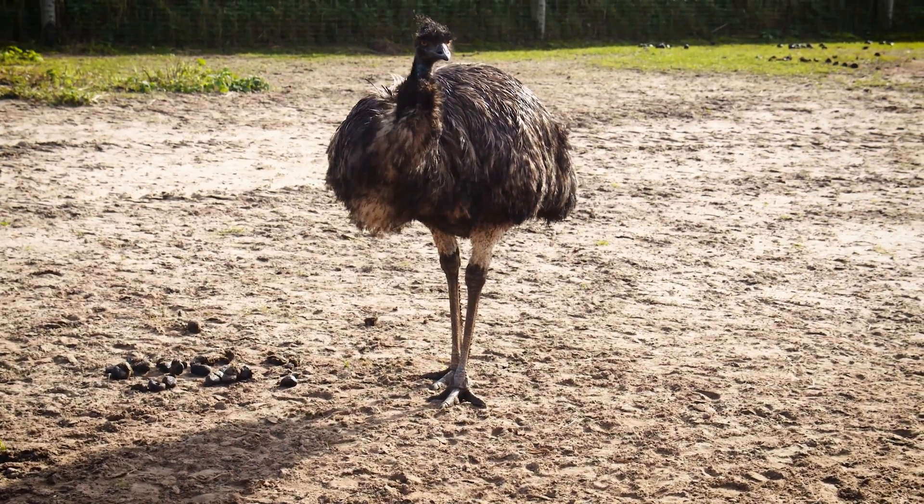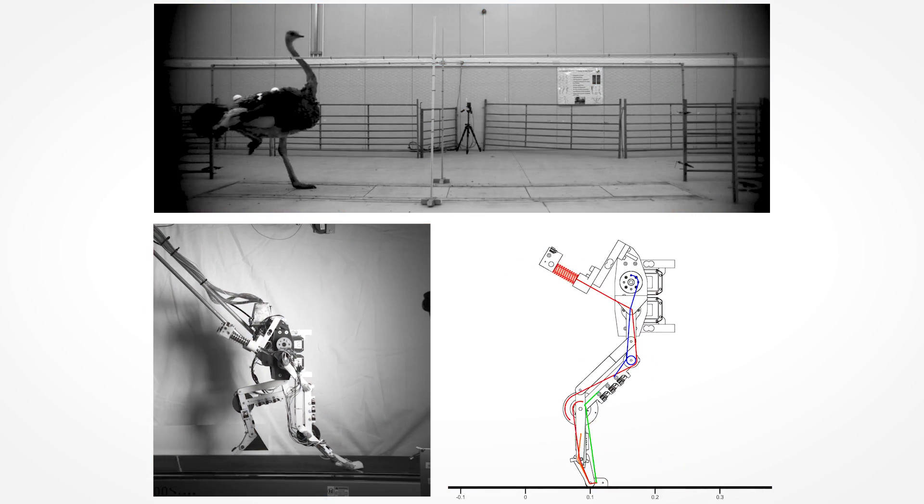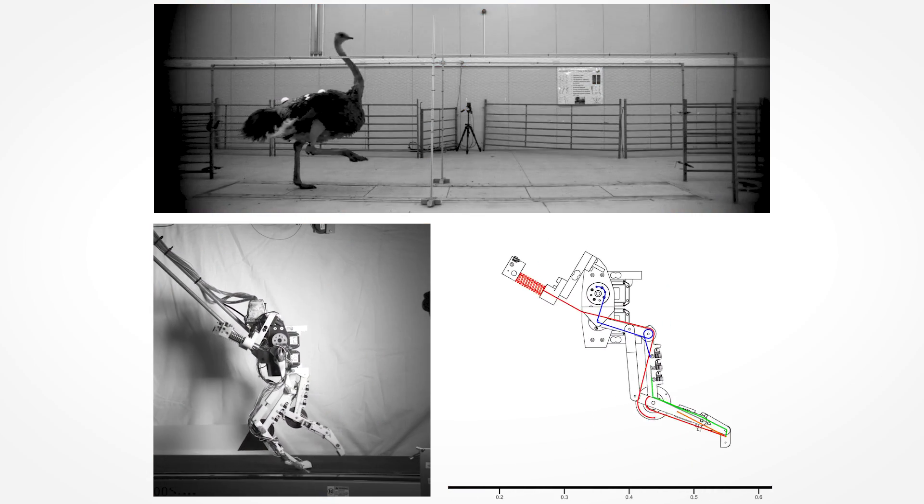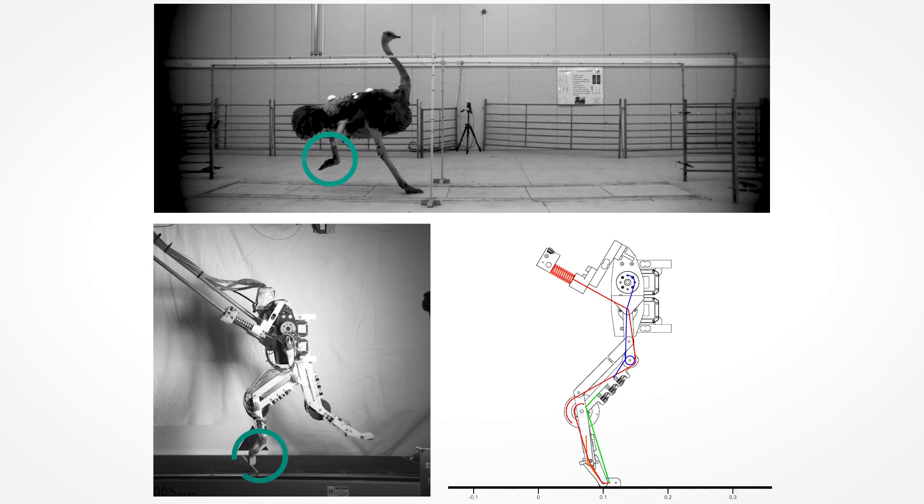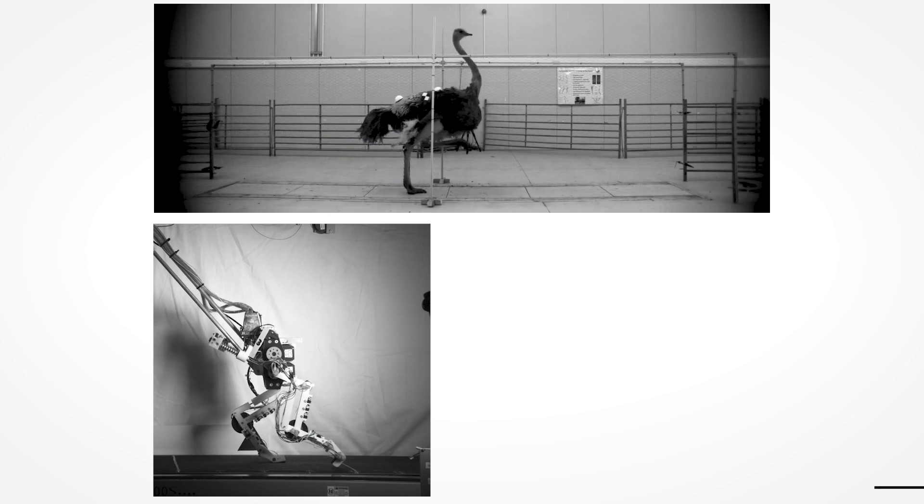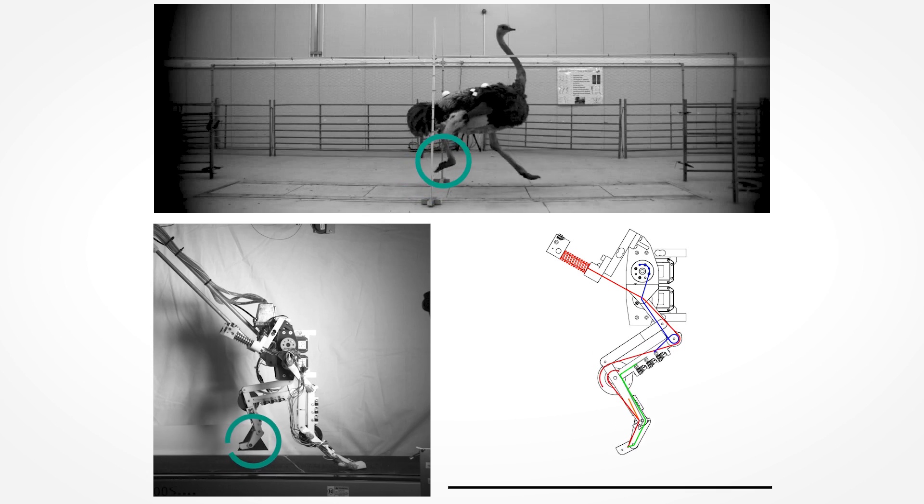Back to the real animal, birds fold their feet backward during the swing phase. Alexander Badri-Spröwitz, who is first author of the study and his team, attribute this movement to a mechanical coupling.